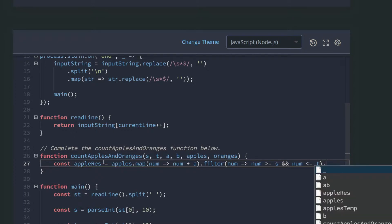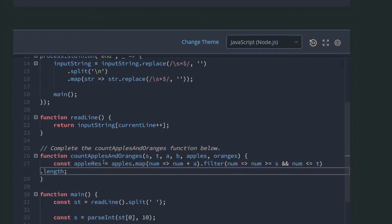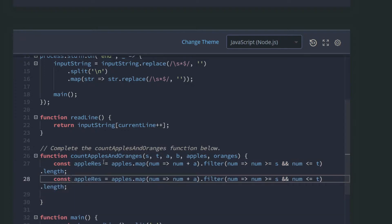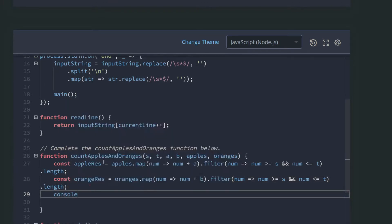Finally I will need the length of the result array, dot length. That's it. The same thing, so I will copy this for the orange result. For oranges here I need to add B, the position of the orange tree, and this stays the same. I need to console log for apples.